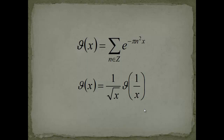We've proved the functional equation of the theta function. It requires a little complex analysis and the Poisson summation formula. There may be a way to prove it using heat equations — if I work that out, I'll do a video on it. The reason for this video is that we need it to prove the important functional equation of the Riemann zeta function, which shows the zeta function can be written in a very symmetric way. Thanks for watching — please subscribe and feel free to ask questions.